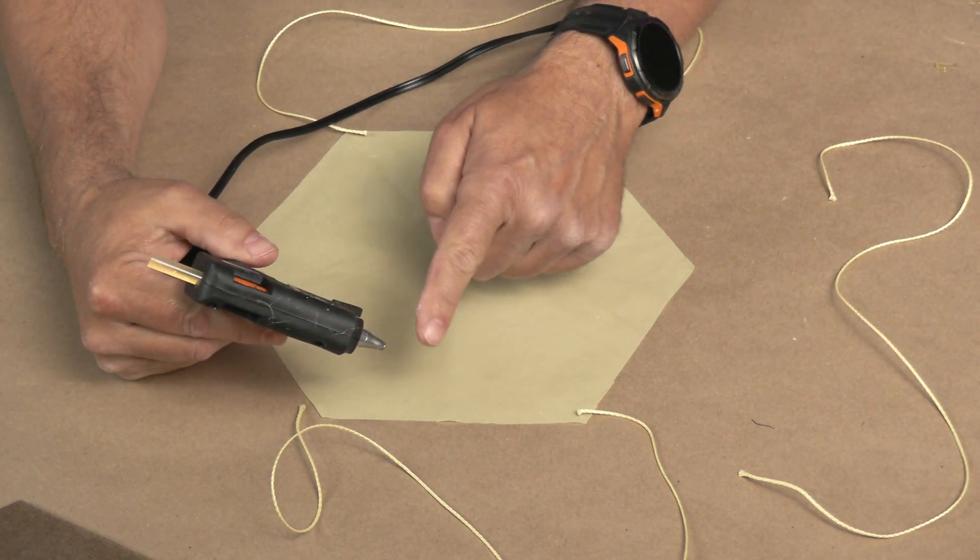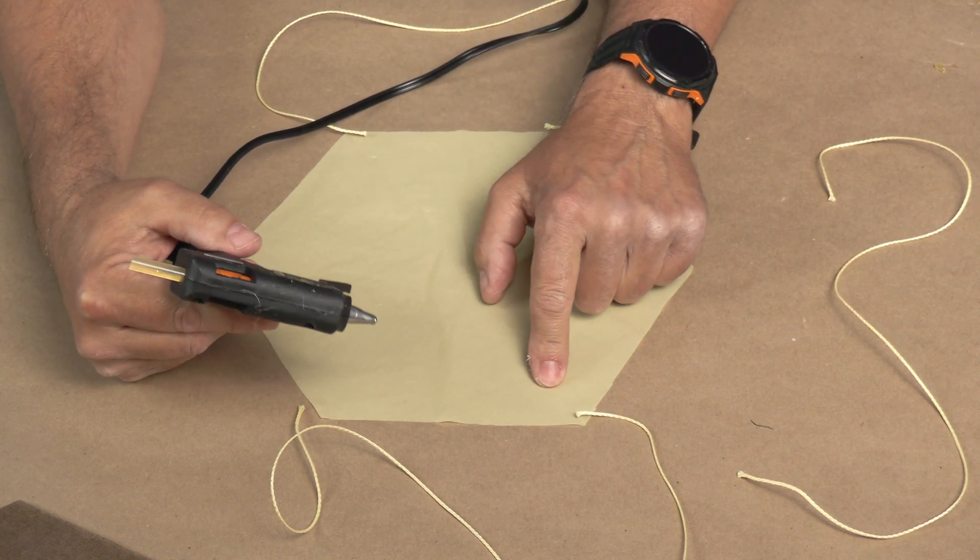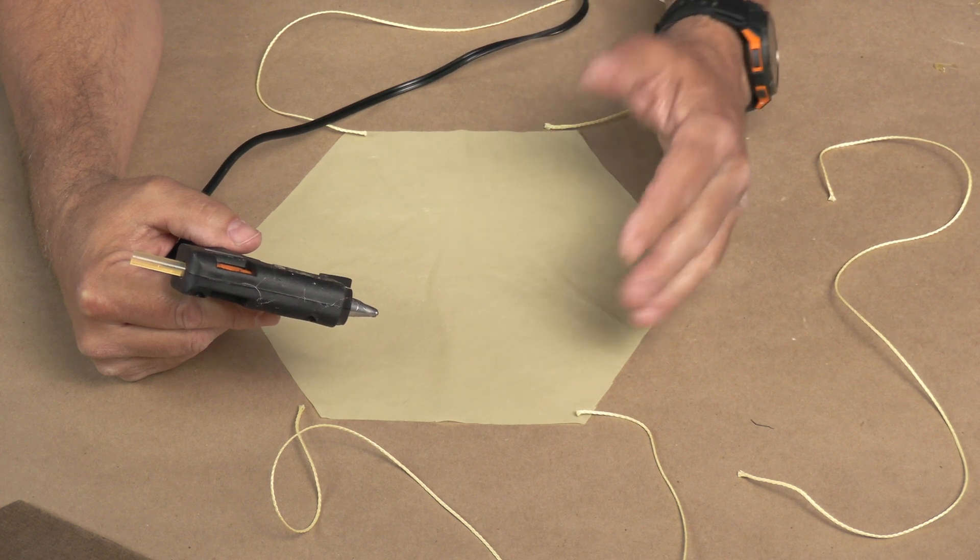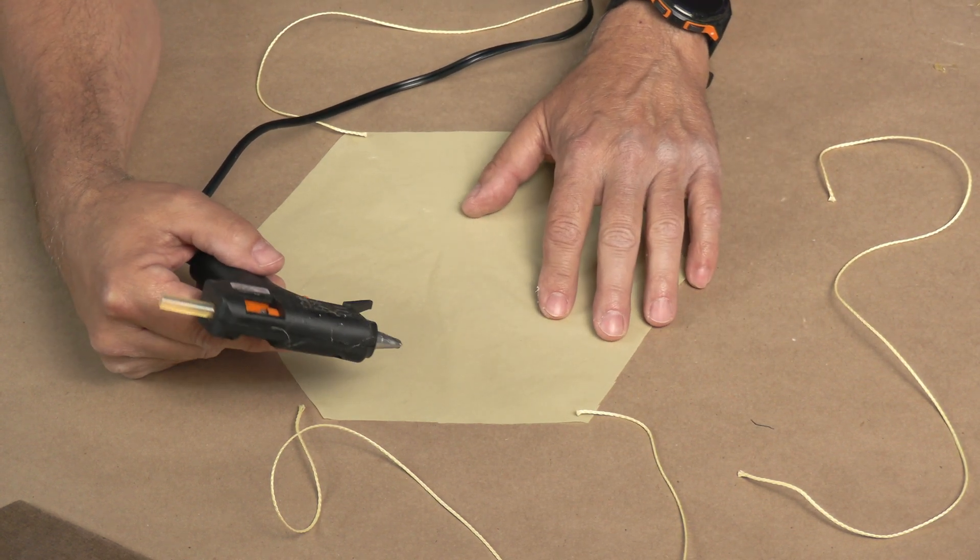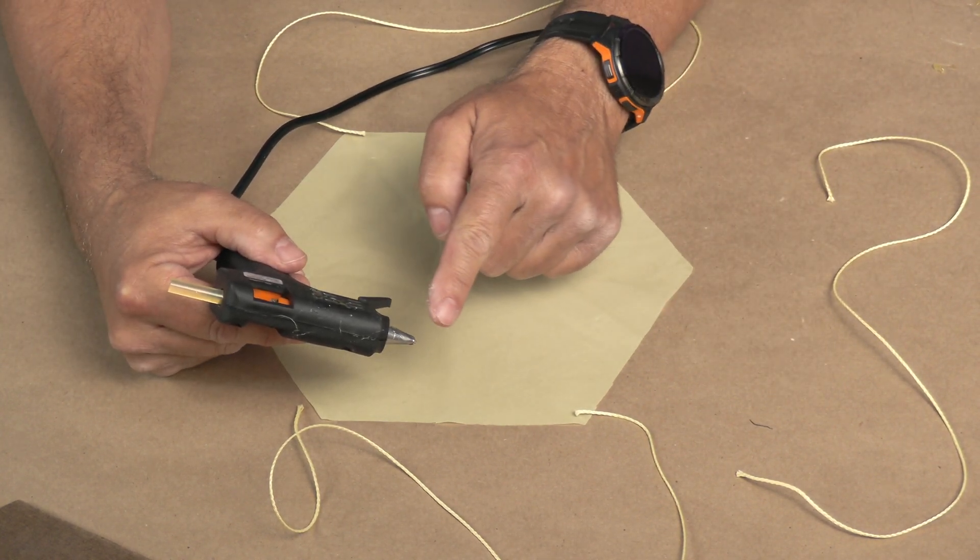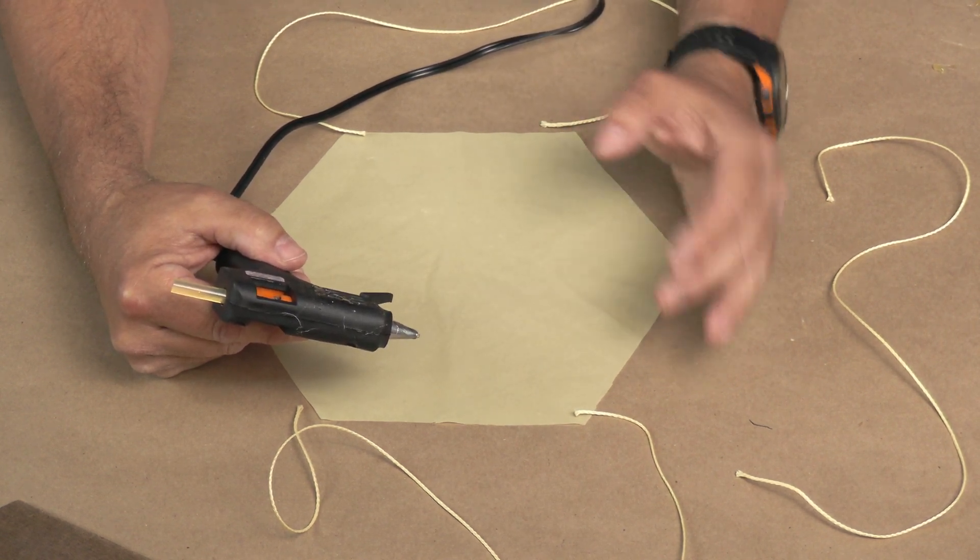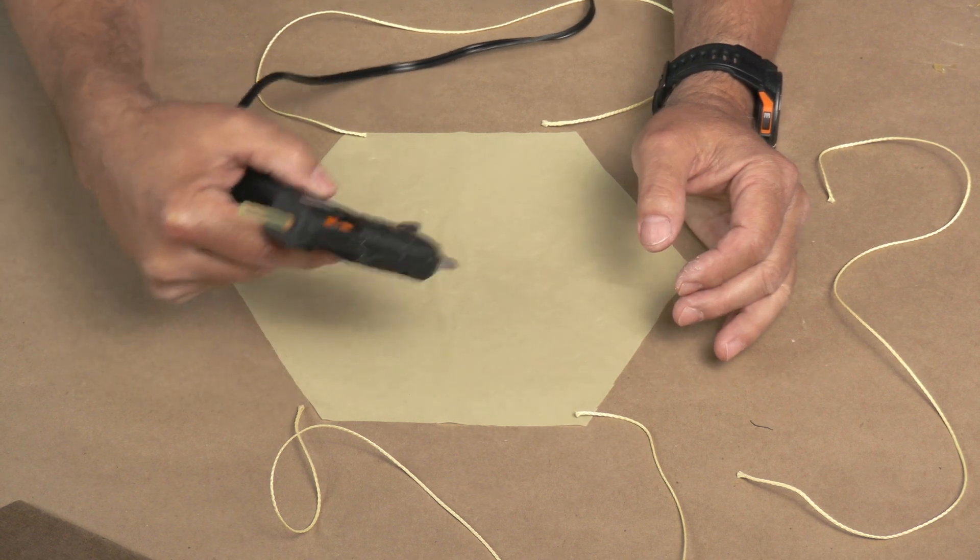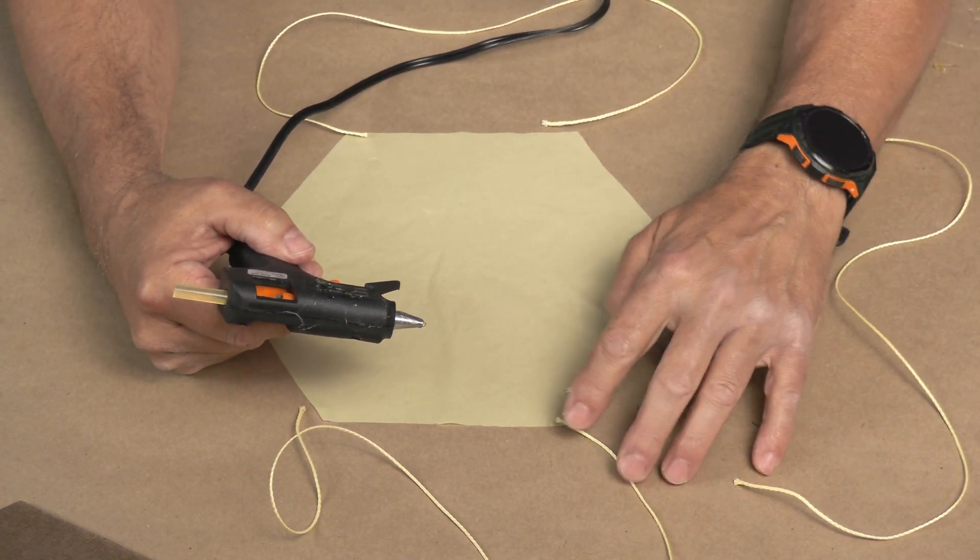I'm going to use a hot glue gun to attach them. Now, one thing you want to be careful of, you don't want to touch the tip, of course. And you don't want the tip to touch this plastic tablecloth that you can get just a lot of it and make plenty of these parachutes out of it for very little money. But you don't want to touch the plastic tablecloth to the hot nozzle because it can melt it. And if you get a small melt spot, you can just kind of fill it in.